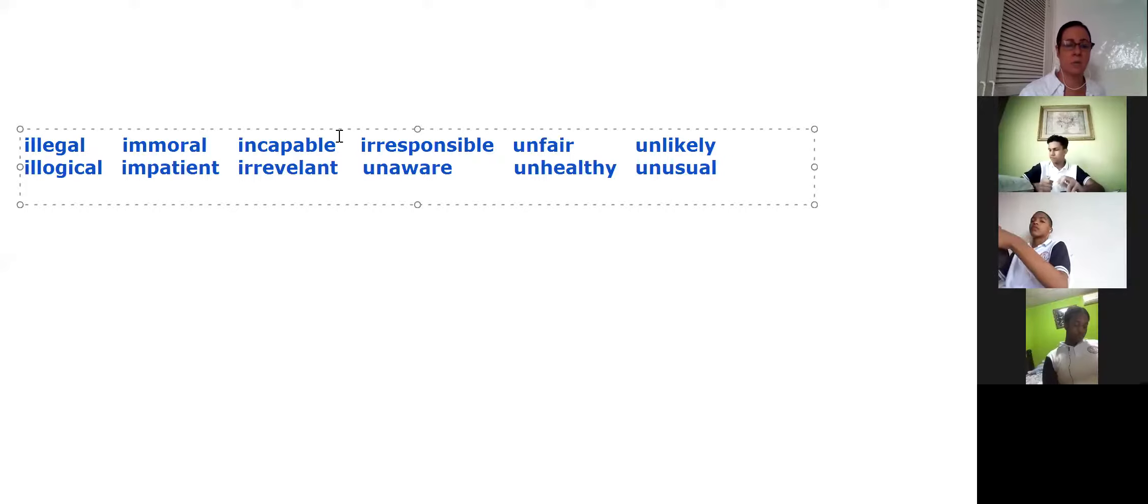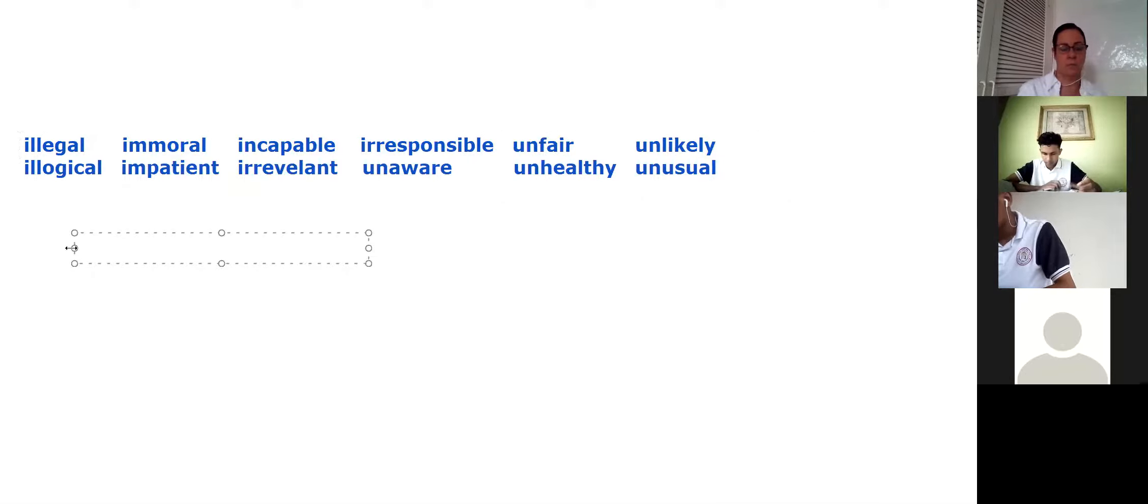We have these words, you have to use them to complete the sentences in exercise seven. The first sentence is: My mom thinks it's blank to skip breakfast. Unhealthy. Exactly, unhealthy. So the first one, number one is unhealthy.